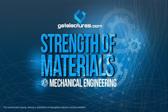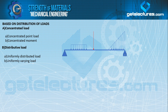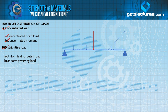The third type of load based on the distribution of loads is divided into two parts: (a) concentrated load and (b) distributive load. The concentrated point load and concentrated moment will be covered in the next few lectures. In this lecture, the focus is on distributive load — UDL (uniformly distributed load) and UVL (uniformly varying load) — which is very important.